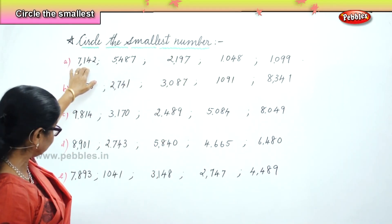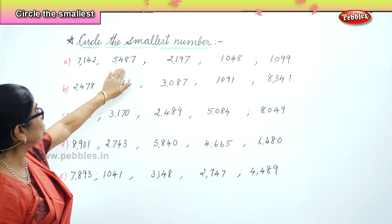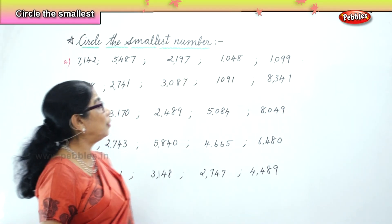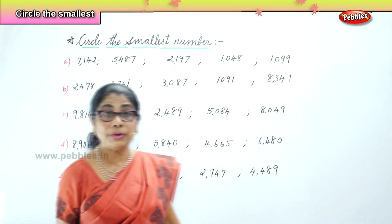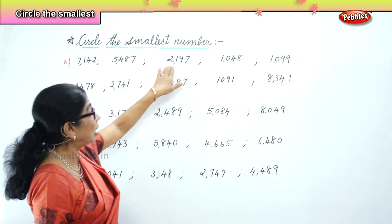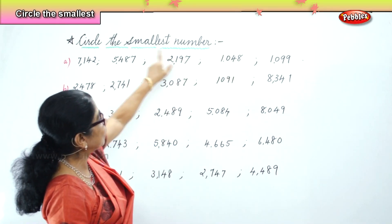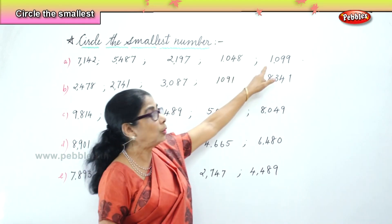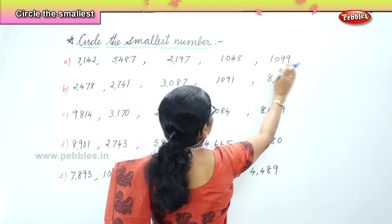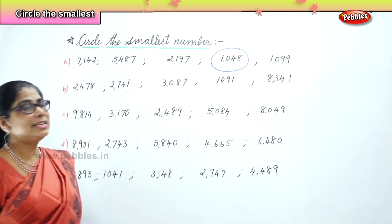So in the first set you have 7,142, 5,487, 2,197, 1,048, and 1,099. Let us look at the thousands first: 7,000, 5,000, 2,000, and two 1,000s. Now we are looking at the smallest number. 1,048 is definitely smaller than 1,099. So the smallest number we are going to circle is 1,048.